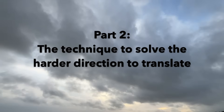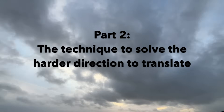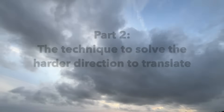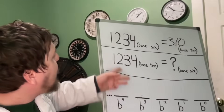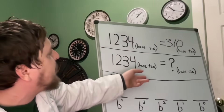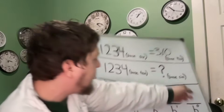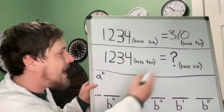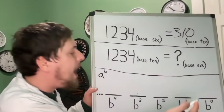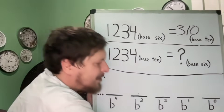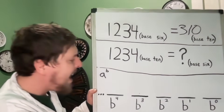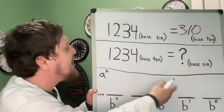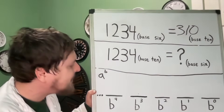But what about translating in the other direction? How can we use all these rules and patterns to figure out the digit string that lines up with the quantity 1234 in a different base — like in base six, finding some amount from zero to five of ones, plus some amount of sixes, plus some amount of thirty-sixes, that gives us that quantity when all added together?